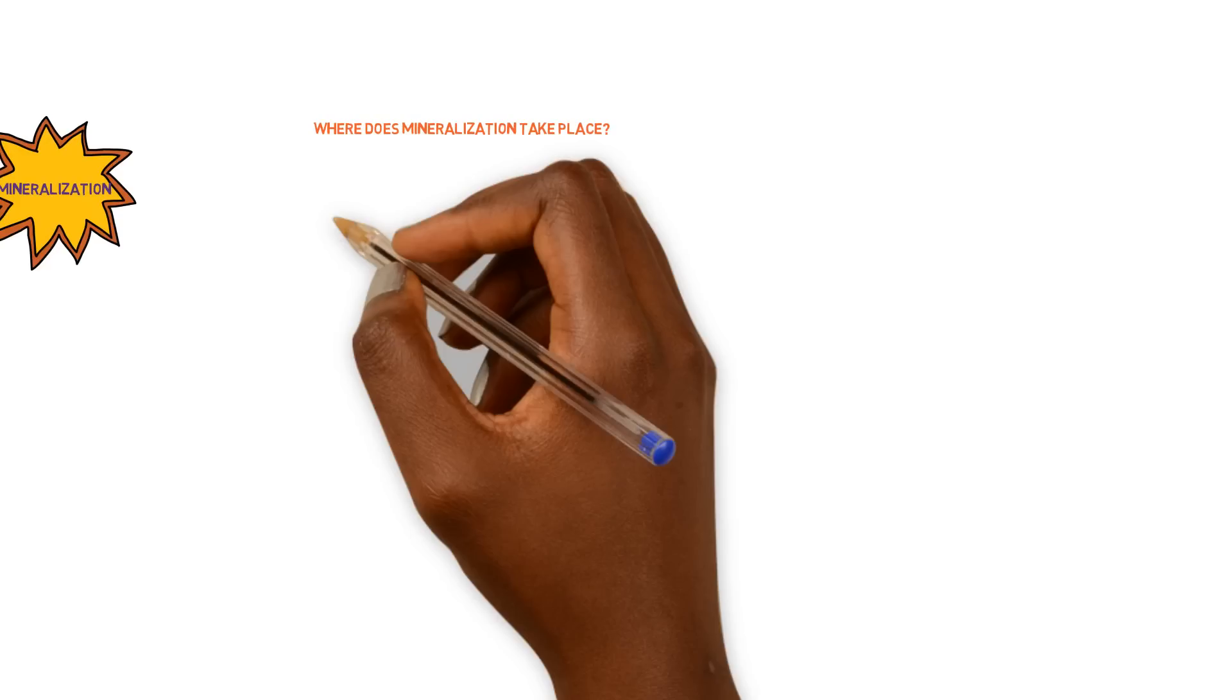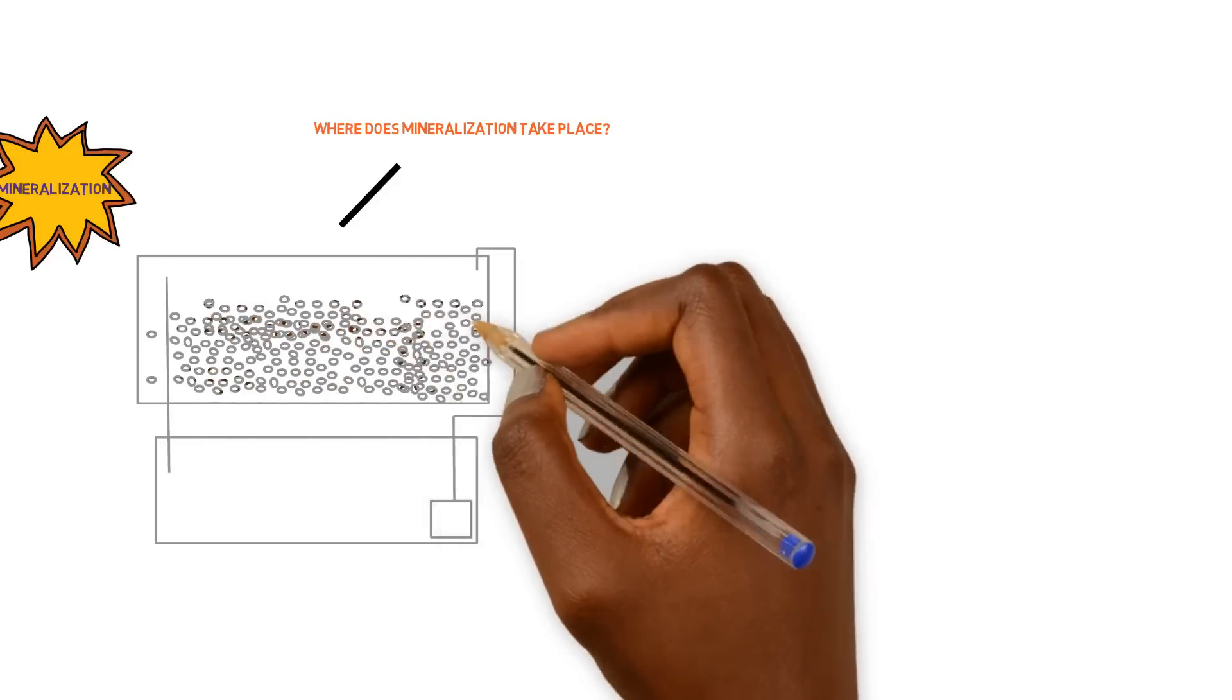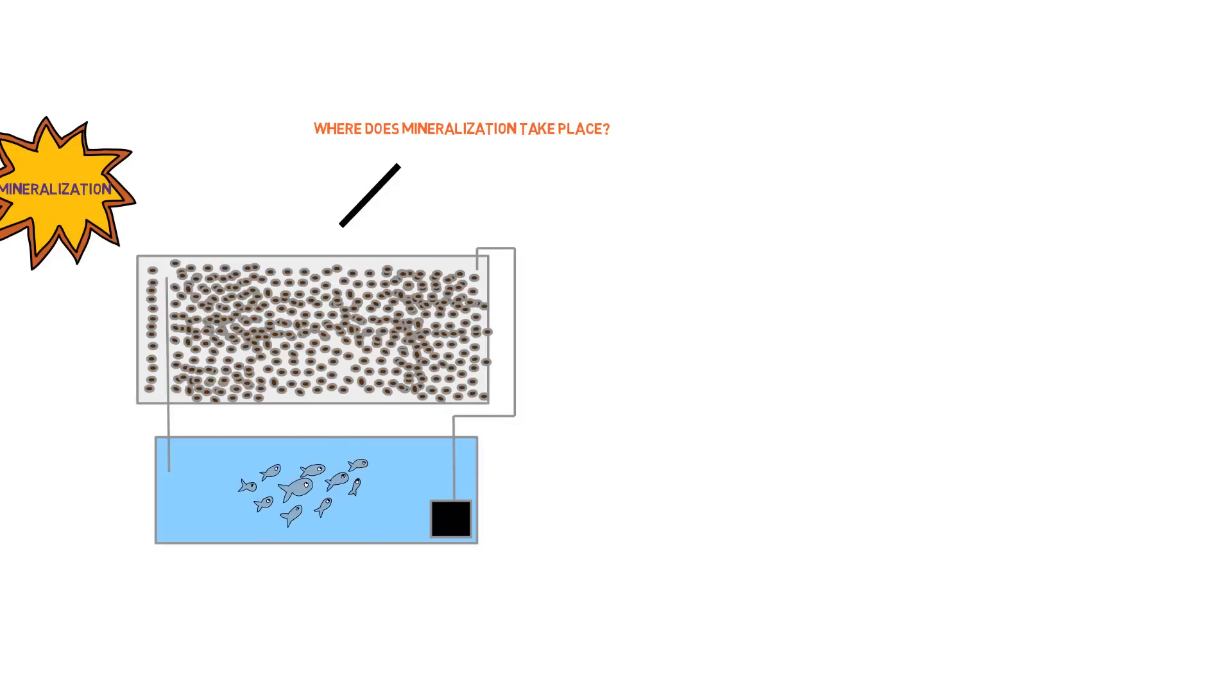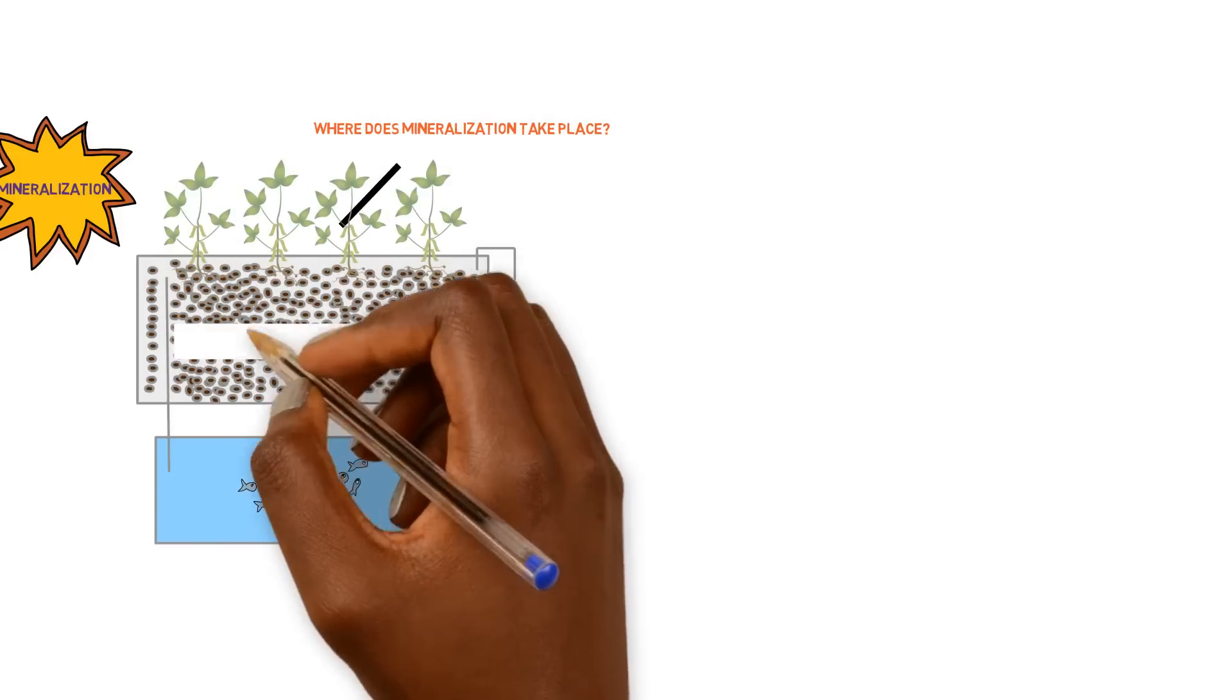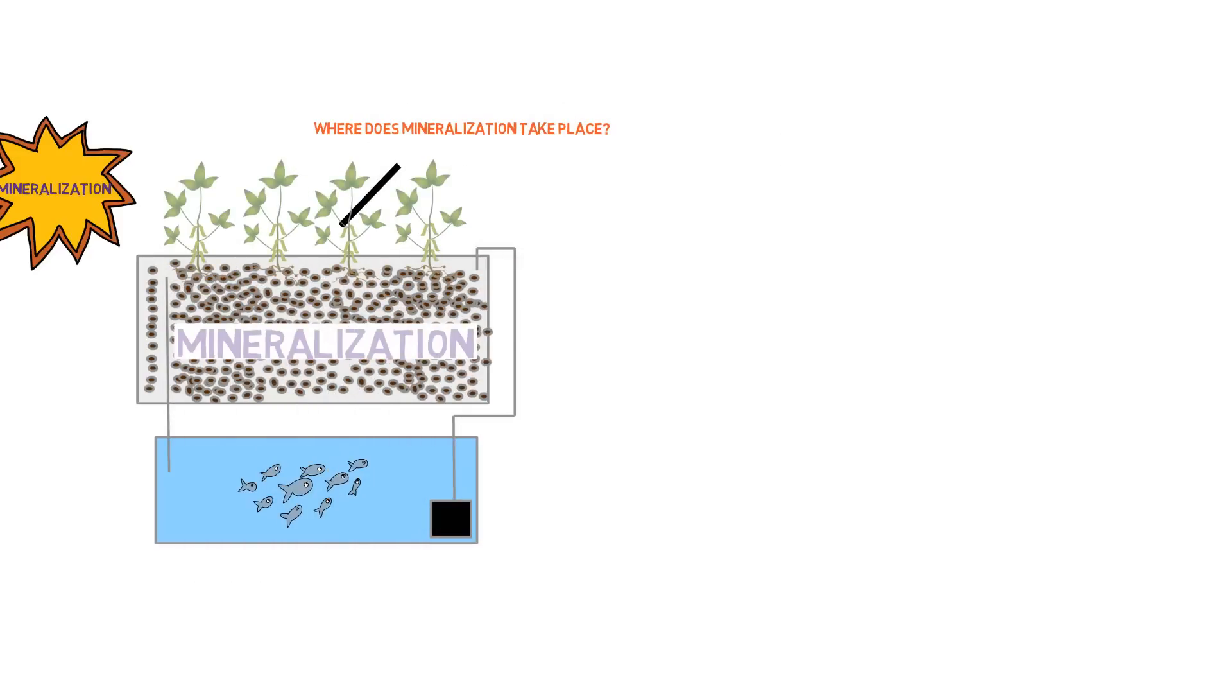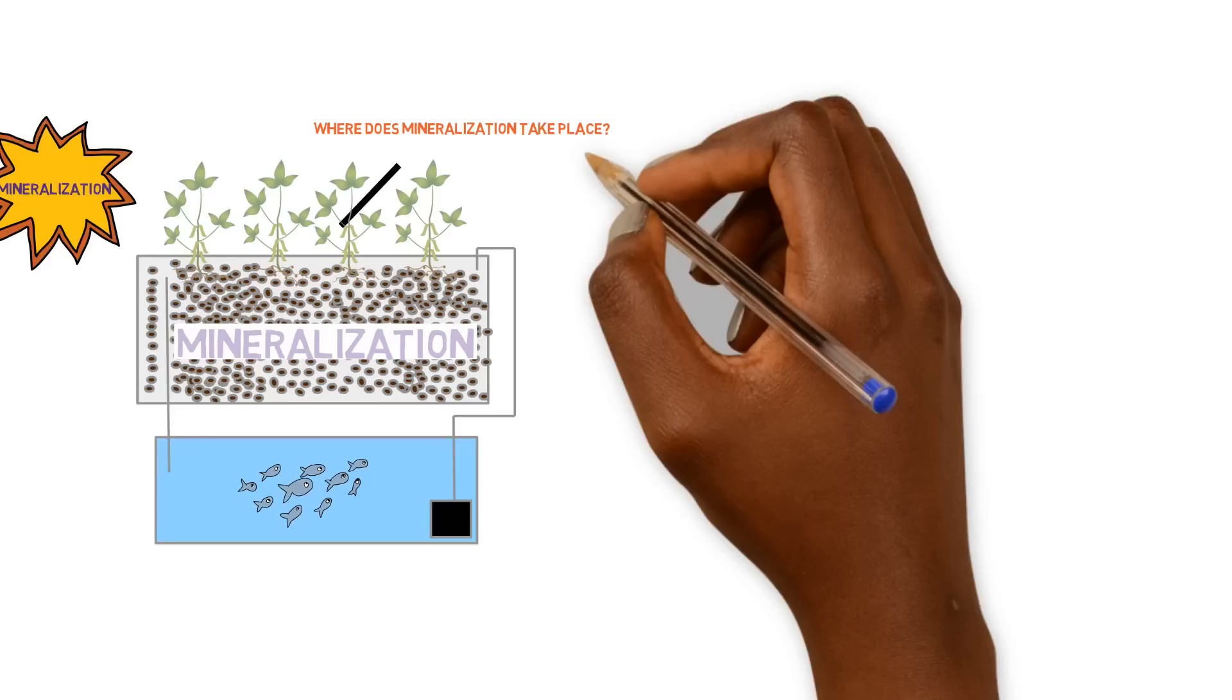The first way that a lot of people use, the majority of people are going to be using, is some type of media bed. This is where solid waste is going to accumulate and then eventually mineralization will take place inside of the media bed, whether it's a flood and drain system or if it's a continuous flow media bed. This is one aspect or one place where mineralization can take place.